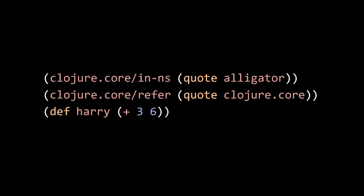Let's see how all of this works in code. Here we start by making alligator our current namespace and then we use the standard library refer to take all of the interned mappings of Clojure.core and referring them into the current namespace alligator. What this means is that the symbol plus sign resolves in the current namespace alligator to a referred mapping — the very same mapping found in Clojure.core, so the var is the same; it's the same function. Effectively we are using the function from the namespace Clojure.core.